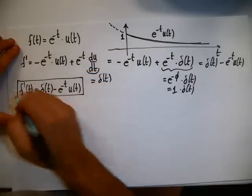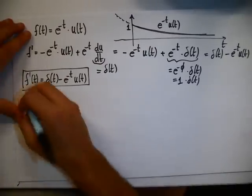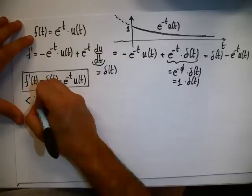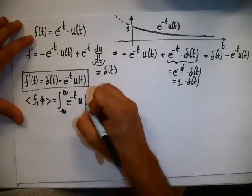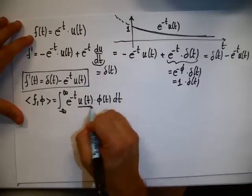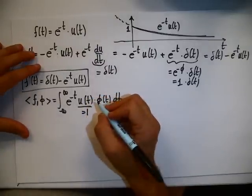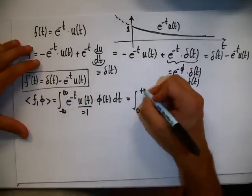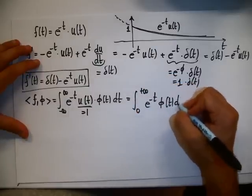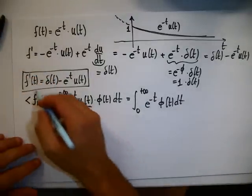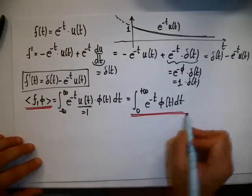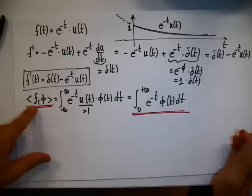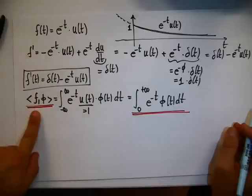Let's see if we can derive the same results using distributions. I already know that the distribution associated with f is T_f(φ) = integral from minus infinity to infinity of e^{-t} u(t) times φ(t) dt. Since the step function is only equal to one on zero to infinity, this integral equals the integral from zero to infinity of e^{-t} φ(t) dt. So the function f as a distribution is defined using this integral.